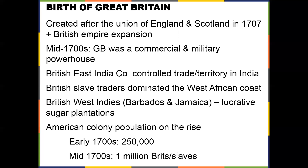One of the ways Great Britain was making money was through the British East India Company, which controlled trade and territory in India. British slave traders dominated the West African coast, and the British West Indies — Barbados and Jamaica — had lucrative sugar plantations. The American colony population was also on the rise: in the early 1700s there were about 250,000 British people in the colonies.